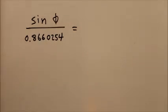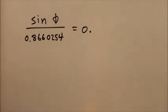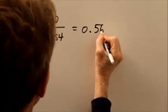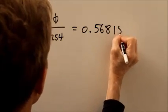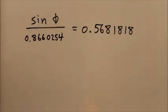And you can go to seven digits again, seven significant digits: 0.5681818. Okay, we're getting there.